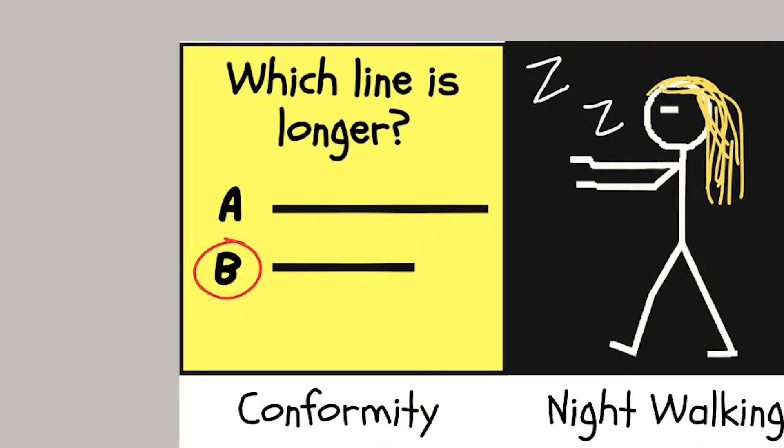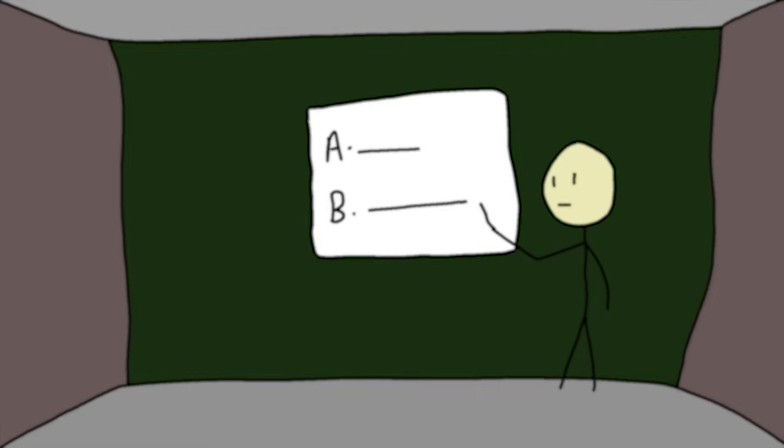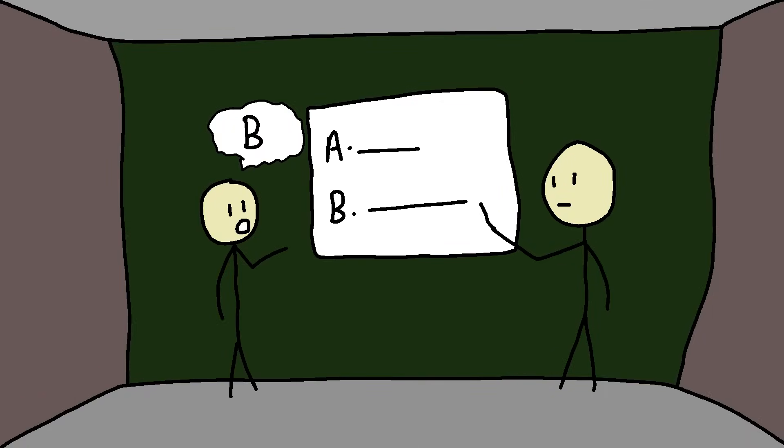The conformity glitch. Line A, line B. Which one's longer? Easy, right?